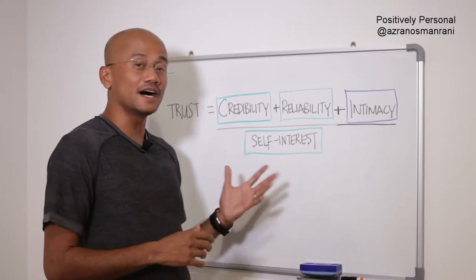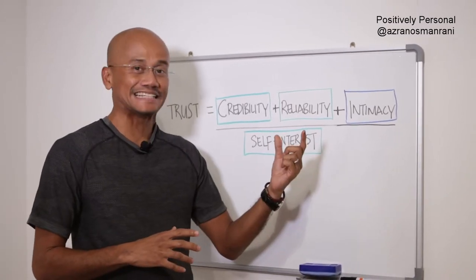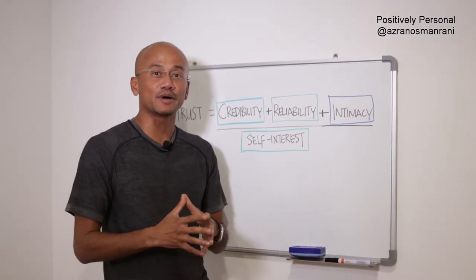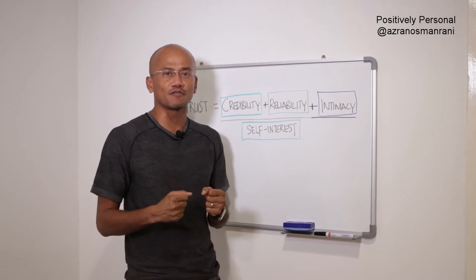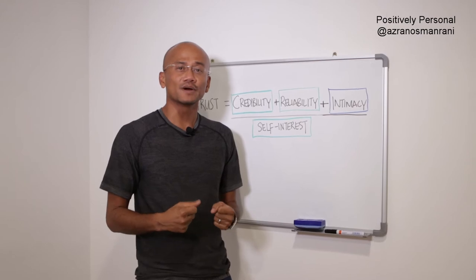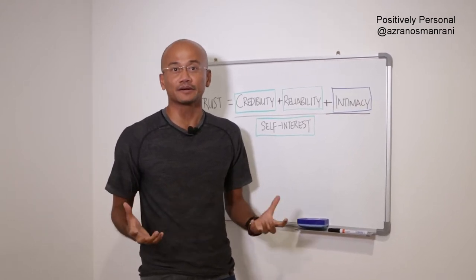In this final of five videos on the trust equation, I want to focus on intimacy. Intimacy or authenticity is about whether you feel you know someone in terms of what they stand for, their values, and specifically whether they mean what they say. In other words, are they being transparent?